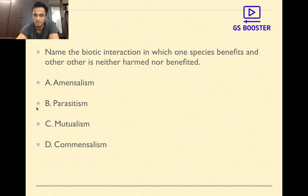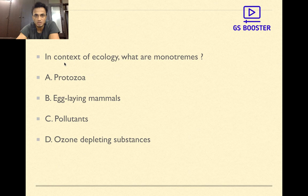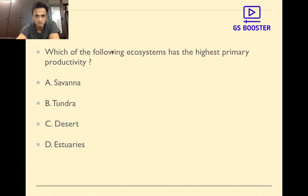In context of ecology, what are monotremes? Protozoa, egg-laying mammals, pollutants, ozone depleting substances. The answer is B, egg-laying mammals. Monotremes are only two: echidna and duck-billed platypus. Both are egg-laying mammals, they are called monotremes.